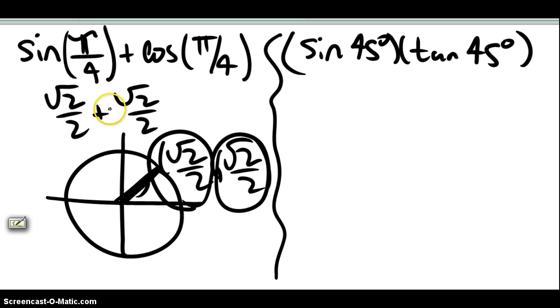We can add those together. We're going to get 2 square root of 2 over 2, which again, the 2s, you can see right here, these 2s will cancel. And so then I'm just going to be left with the square root of 2. So my answer for that problem is the square root of 2.